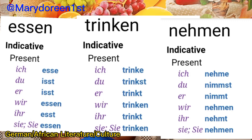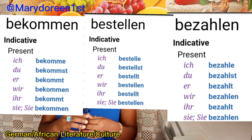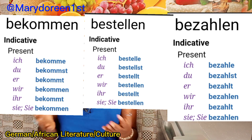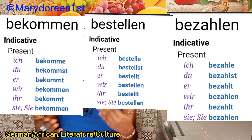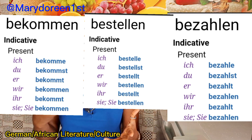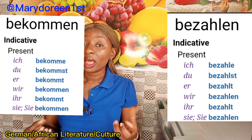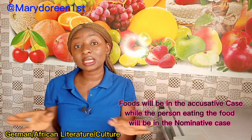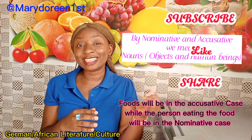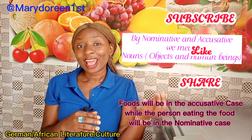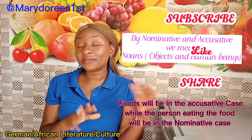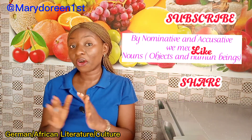For example: essen (verb to eat), trinken (verb to drink), nehmen (verb to take), bekommen (verb to get), bezahlen (verb to pay). For example, if you are in a restaurant — bestellen (verb to order). You can mix sentences with these. You can see how nouns change from nominative into the accusative.